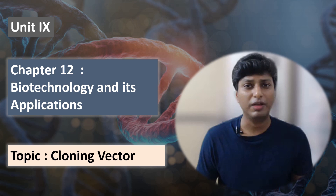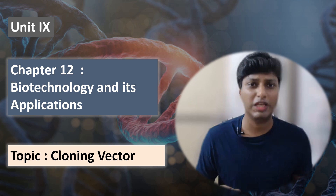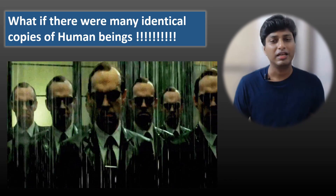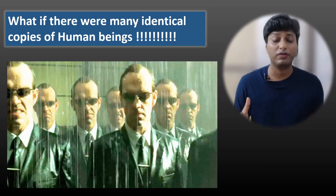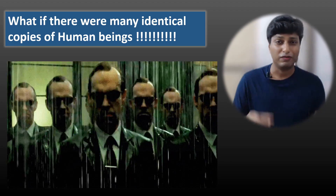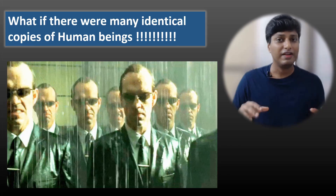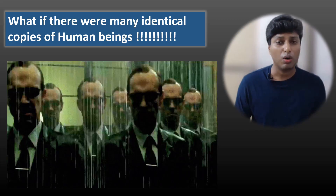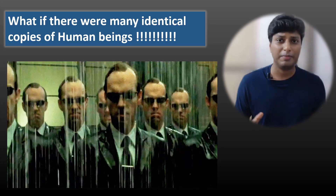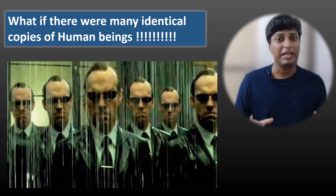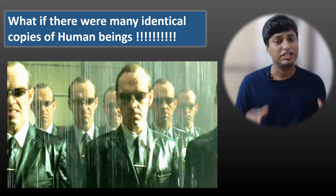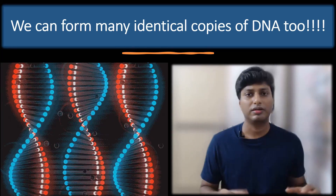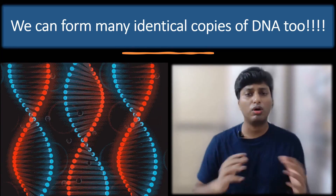In this video I will be explaining what is basically the meaning of cloning and what do we mean by vector. Can we imagine for a minute — what if we had many many identical copies of ourselves? Of course we watch that in movies, but in reality it is not possible. We cannot form identical copies of humans or any particular animal. But we can definitely form many many copies of something called genes. These identical copies are called clones — in biological language, all similar copies are called clones.